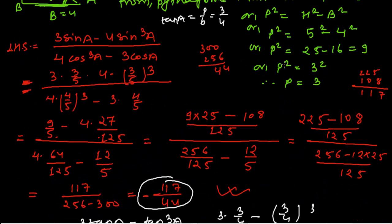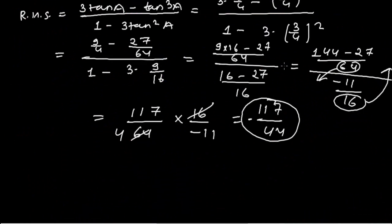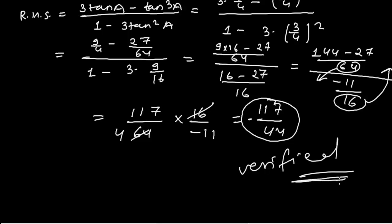Both left hand side and right hand side equal negative 117 upon 44, so LHS equals RHS and the question is verified. Keep watching the videos — we'll be solving lots of problems. If you have any problems, please mail us and we'll try to solve them in the next video. Thank you, bye.